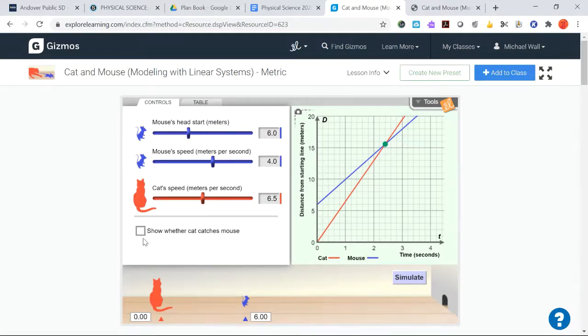It's almost like a little cheat sheet over here. I'm not going to do it, but if you click this when you have the sliders over here in different positions, it will let you know whether the cat catches the mouse or not.